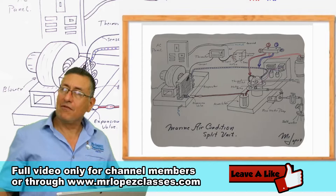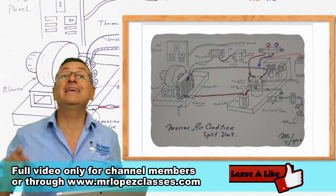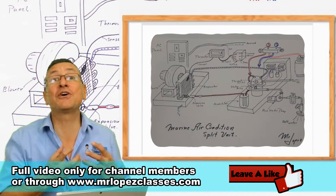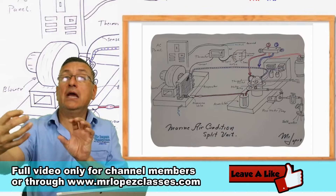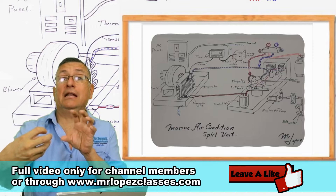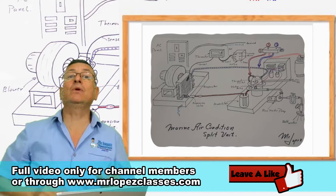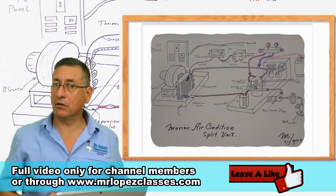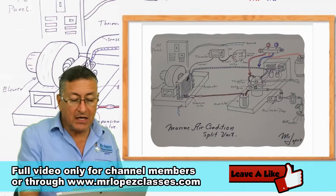Heat is absorbed in the evaporator. The air at ambient temperature leaves the heat over there and passes to the other side with less heat — that is how heat is absorbed in the evaporator.